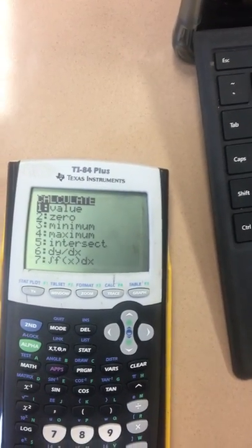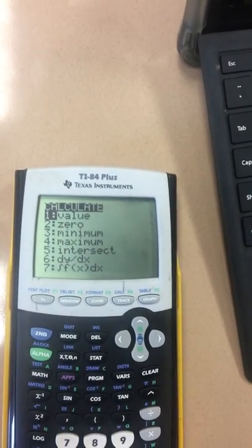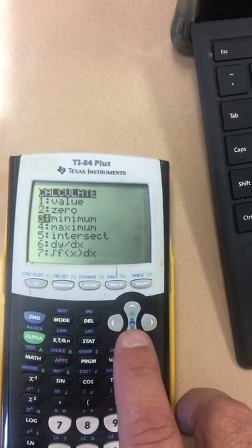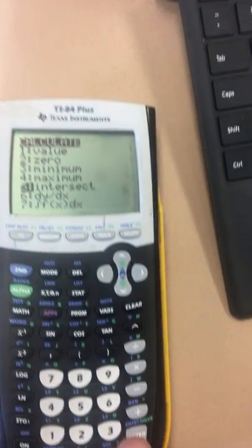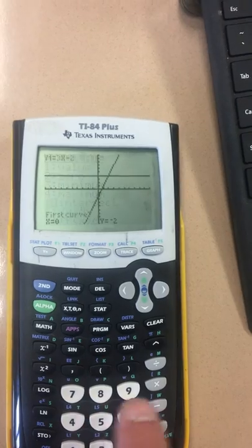It gives us a number of choices. Number 5 is intersect. That's for an intersection. Now you can scroll down to number 5 and hit enter, or you can just hit the 5 button itself.